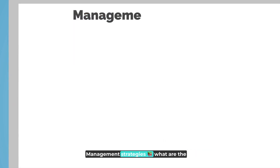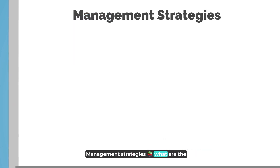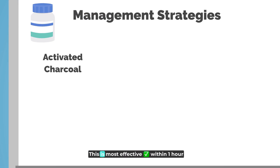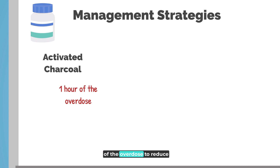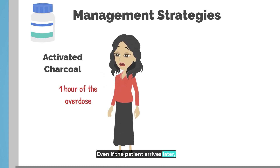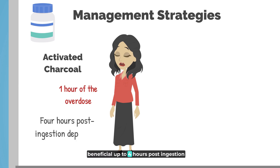Management strategies — what are the management strategies you should know about? Activated charcoal: this is most effective within one hour of the overdose to reduce paracetamol absorption. Even if the patient arrives later, activated charcoal may still be beneficial up to four hours.